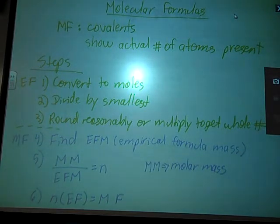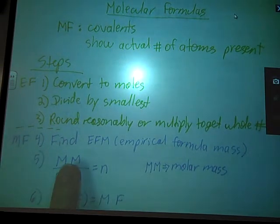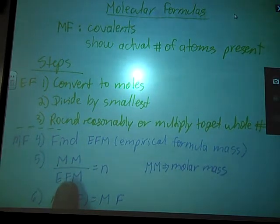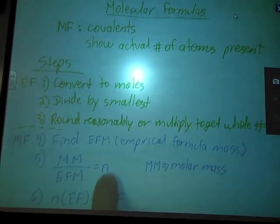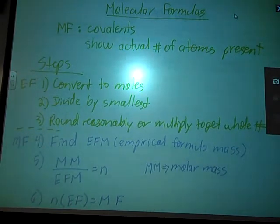After that, then we start moving on to the molecular formula. The first thing you need to do is to find the empirical formula mass. Just like any other formula mass, you add together all of the atoms in the empirical formula. Then you're going to divide the molar mass by the empirical formula mass to get some number. The molar mass is a number that is usually given in the problem because it has to be determined experimentally by a mass spectrometer or something like that.